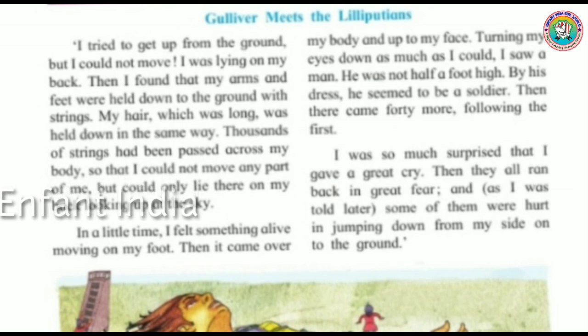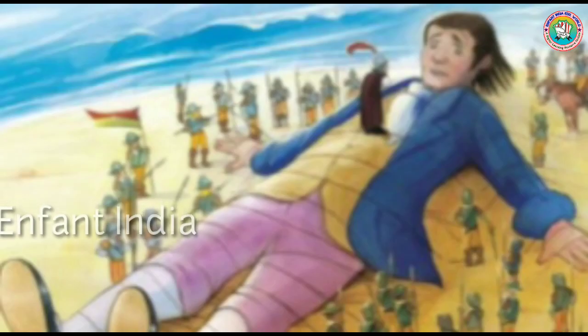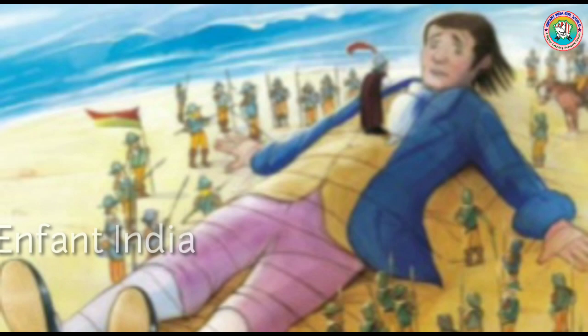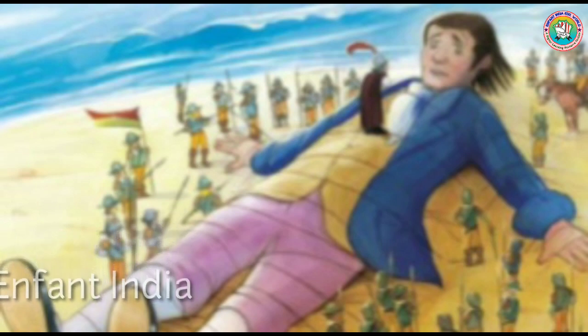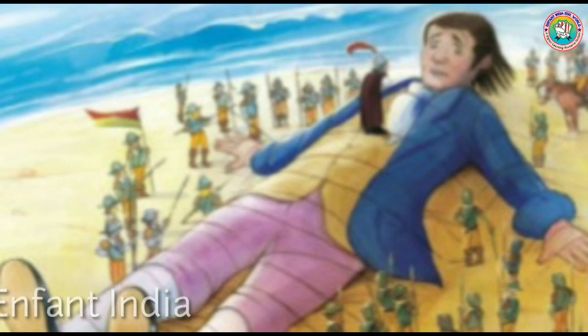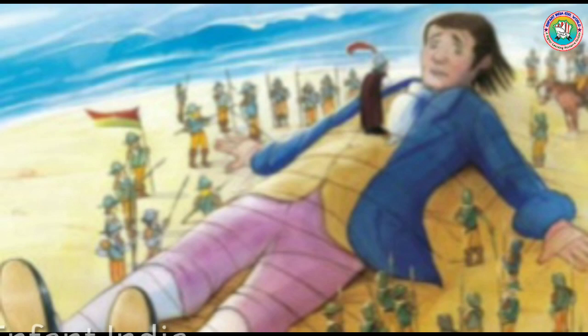Students, see this picture — the picture shows how the Lilliputians have tied Gulliver. Gulliver cannot move any part of his body; they have tied him with thousands of small strings. Gulliver can only look upward.